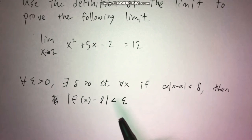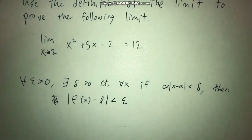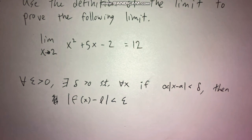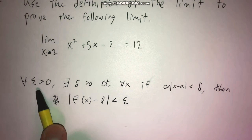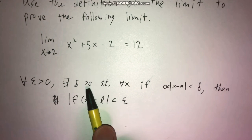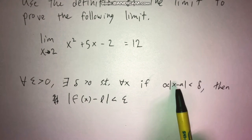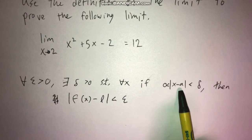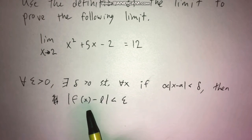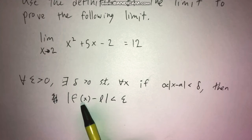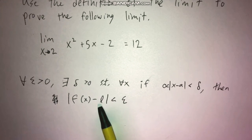So essentially, all this is saying is we need to figure out what delta would make this whole thing work. Our goal is to figure out some relationship between epsilon and delta so that, no matter what epsilon we're given, we can find some delta so that if our x is within delta units away from a, we can guarantee that our output f of x is within epsilon units away from L.